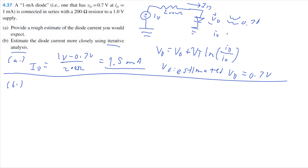I0 is equal to 1 milliamp because it's the current associated with the estimated voltage drop. And then VT is equal to 25 millivolts, the thermal voltage. So, let's get started.